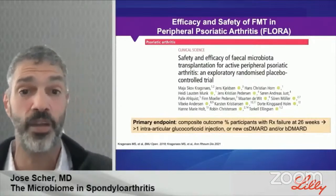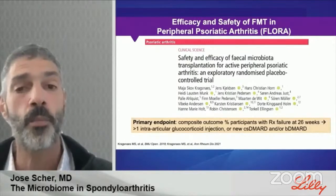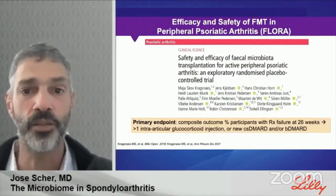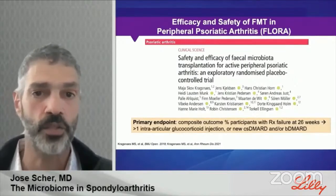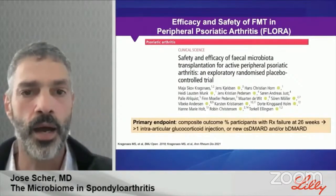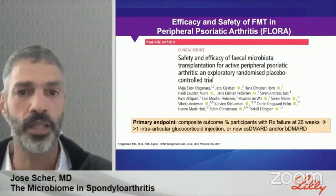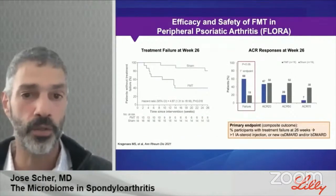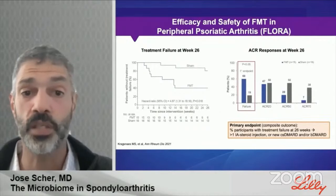FLORA was a double-blind, randomized, placebo-controlled trial comparing the efficacy and safety of one FMT procedure via upper endoscopy versus sham solution in peripheral PsA patients. The primary endpoint was a composite outcome based on shared decision-making, determining treatment failure by both the physician and patient at week 26. Although underpowered — with only 15 or 16 participants in each arm — the results showed that the group receiving sham solution performed unexpectedly and significantly better than the group receiving FMT.